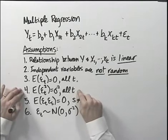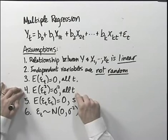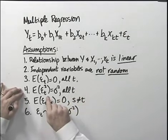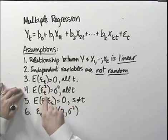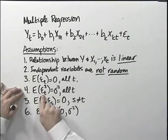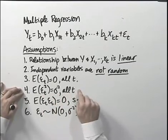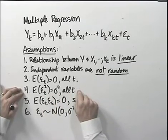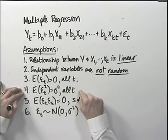The fourth assumption is that the expected value of the squared error term is equal to sigma squared for all t. Notice this is a statement about the variance of the error term. Since the expected value is already assumed to be zero, to find the variance of the error term, we just need to find the expected value of the squared error term. We're setting that equal for all t. This is an extremely important assumption, and we'll revisit it when we talk about problems you may encounter when running multiple regressions.